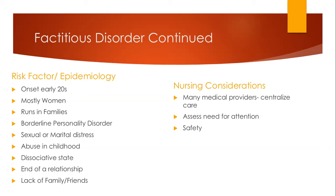That brings us to factitious disorder imposed on another, formerly known as Munchausen's by proxy. This is when they inflict the injury on another individual in order to get attention. They may induce seizures, poisoning, or smothering. Individuals that are victims of factitious disorder imposed on another have an increased risk of developing factitious disorder themselves. We really want to make sure we're assessing the safety of others as well. And that is it for the anxiety-related disorders.